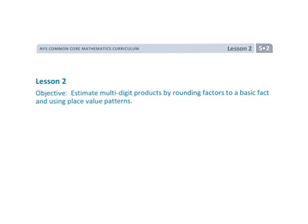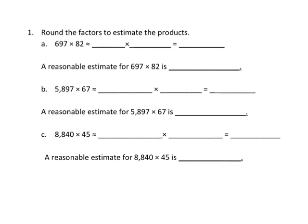Alright, this is Grade 5 Module 2 Lesson 2 and we're going to be using estimation with multiplication — multi-digit products. To round and estimate these products, we're going to round each of the factors.